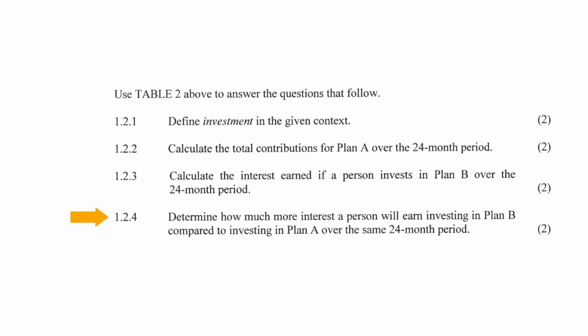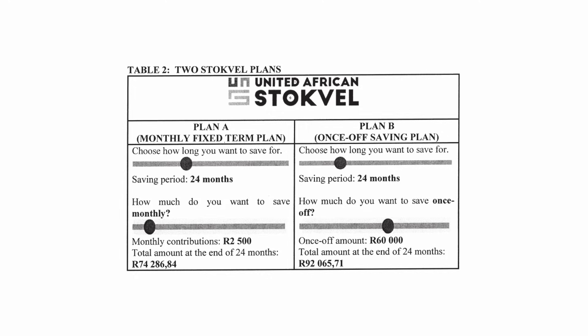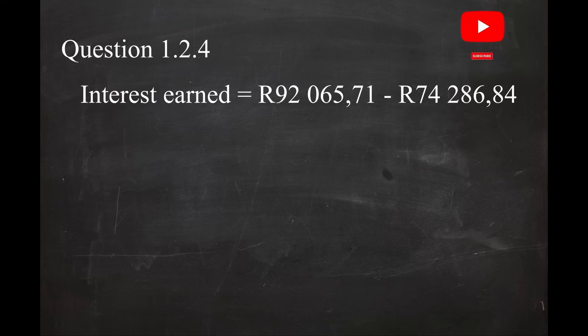In question 1.2.4, you have to determine how much more interest a person will earn investing in Plan B compared to Plan A over the same 24-month period. For both plans, the total contribution of $60,000 is required, but you will earn more money from Plan B compared to Plan A. So the difference in the total interest earned is $92,065.71 minus $74,286.84, and this equals a difference of $17,778.87.